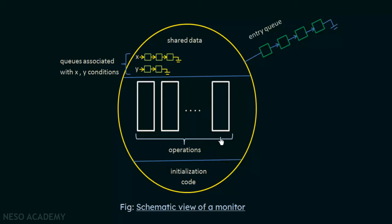The monitor also includes initialization code and an entry queue for processes wanting to access shared data. There are also queues associated with the x and y conditions. When a process wants to access a shared variable currently in use, a wait operation makes it wait in the queue. When the other process finishes and signals, the suspended process is resumed. This is how the schematic view of a monitor works.